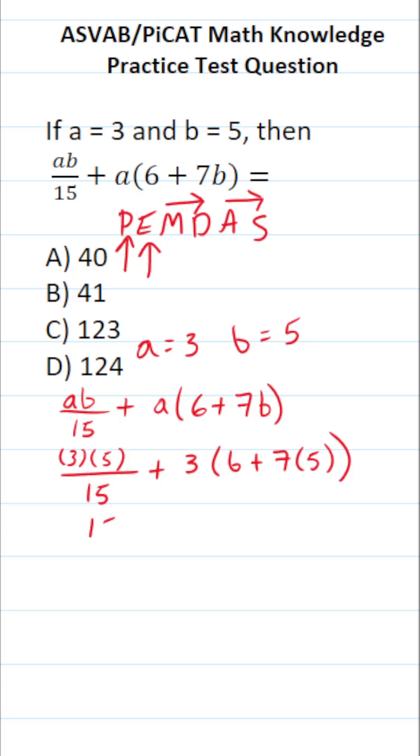3 times 5 is 15. So this is 15 over 15 plus 3 times 6 plus. Let's take a look here. Inside parentheses, we have addition and we have multiplication. According to the order of operations, you do multiplication before addition. So this is going to be 6 plus 7 times 5, which is 35.